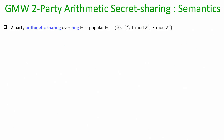Now let us see the GMW arithmetic secret sharing representation, where values are over a ring. The popular ring used in practice is the ring of all L-bit integers, where the addition operation is addition modulo 2^L — so the result of addition is still an L-bit number, and if it exceeds L bits a wrap-around occurs. Similarly, the multiplication operation is multiplication modulo 2^L.